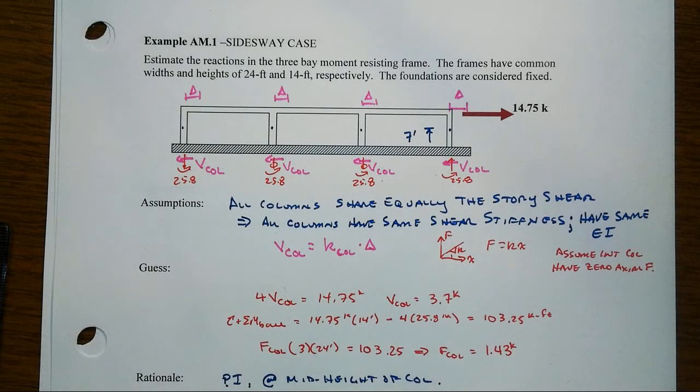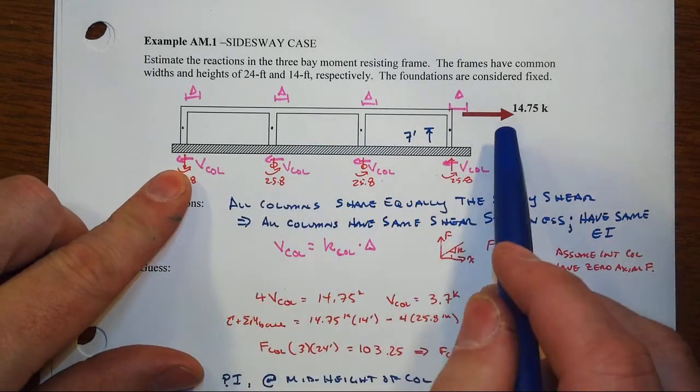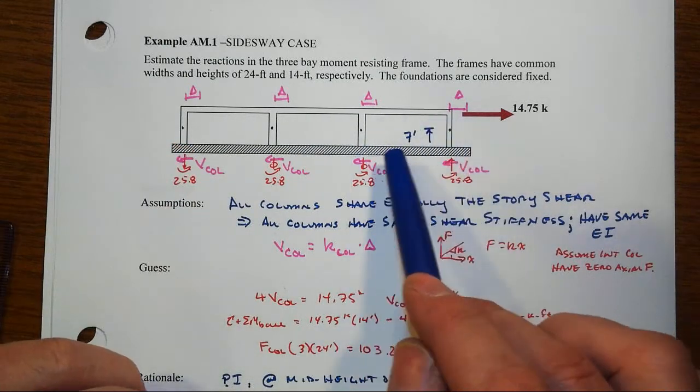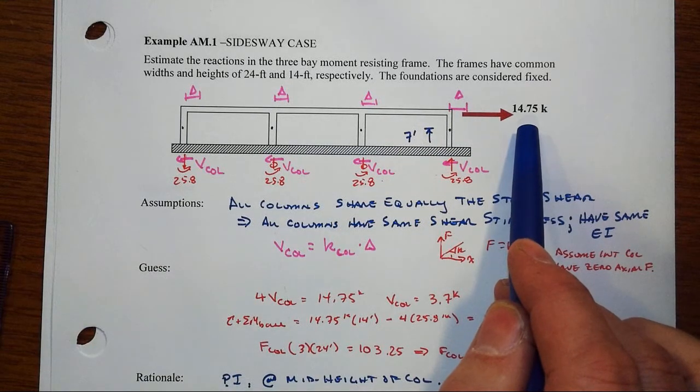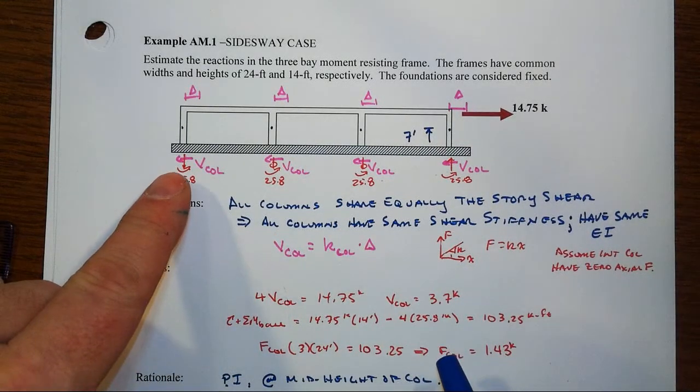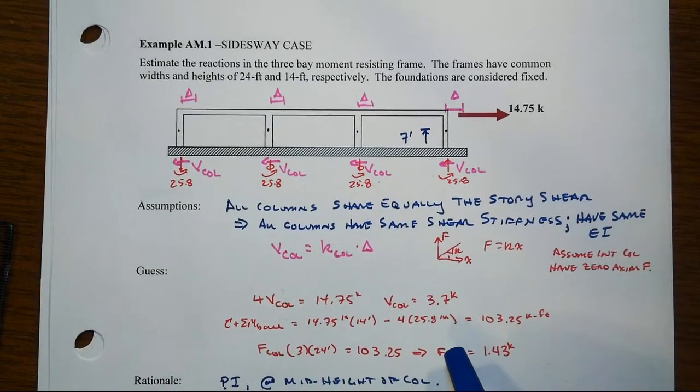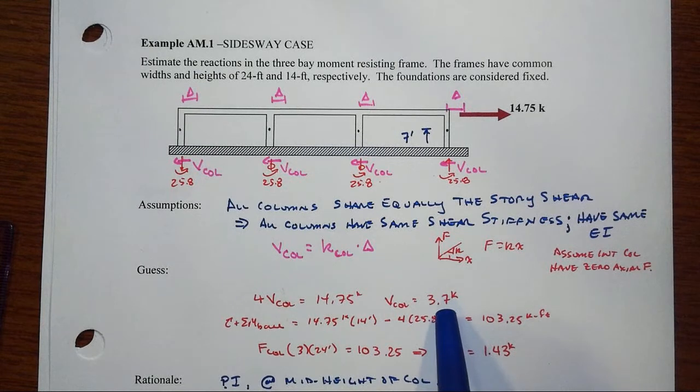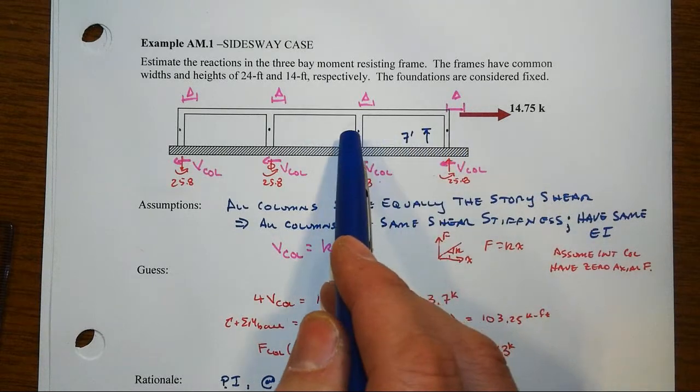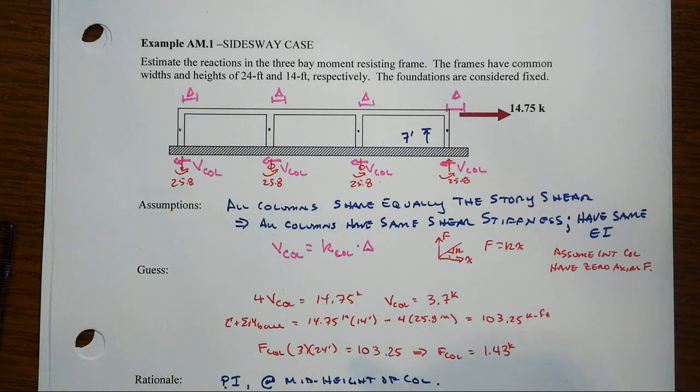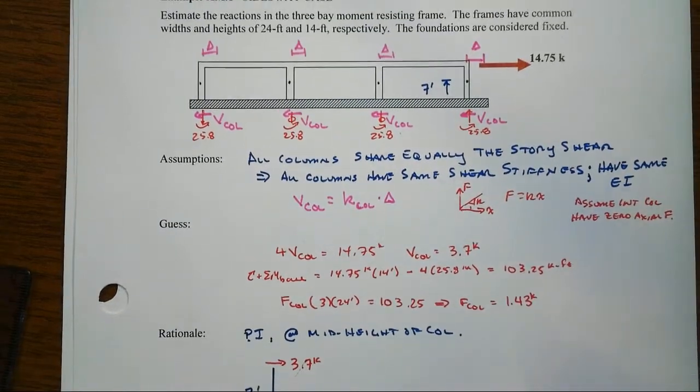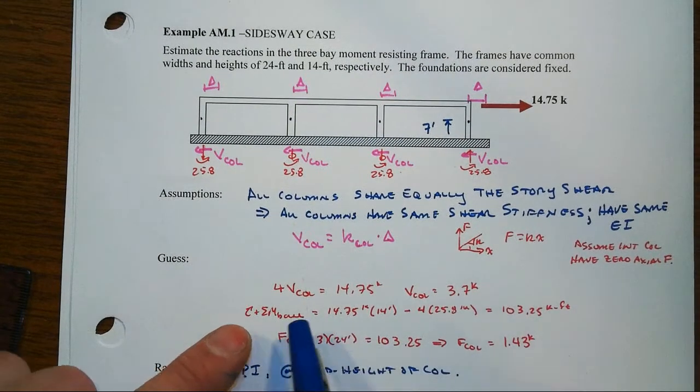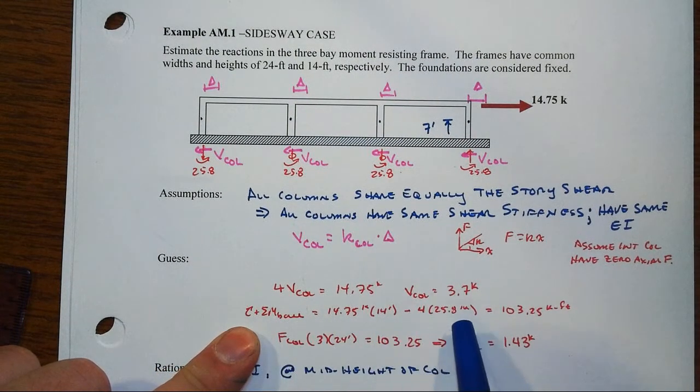In a previous video, we developed some guesses as to what might happen for these reactions. In this 3-bay moment-resisting frame, all the joints are rigid, we got fixed foundations, and the structure responds to a lateral load of 14.75 kips. We made a very gross assumption that all the columns equally shared the load, and that led to the column shear forces being 3.7 kips. We also assumed the inflection point was at the midpoint, and that allowed us to use a simple free body diagram to come up with what the moment was at the base.